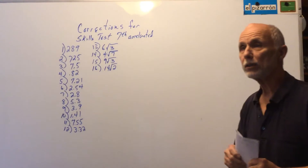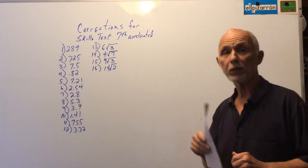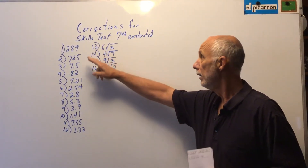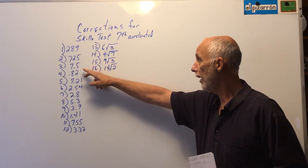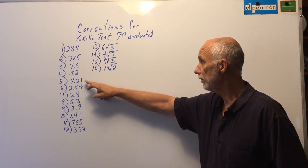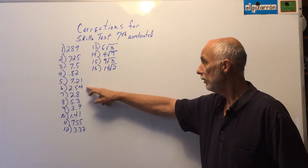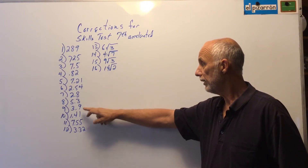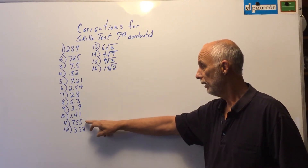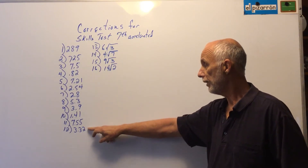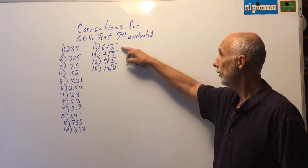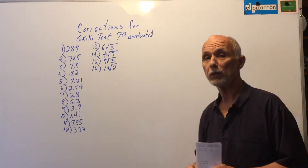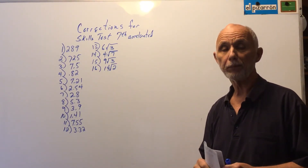The last skills test that you all turned in — I have it from everyone but one person. I went ahead and wrote down the answers right here: 289, 725, 7 and 5 tenths, 82 hundredths, 7 and 21 hundredths, 2 and 54 hundredths, 2 and 8 tenths, 5 and 3 tenths, 3 and 9 tenths, 1 and 41 hundredths, 7 and 55 hundredths, 3 and 32 hundredths, 6 square root of 3, 4 square root of 7, 9 square root of 3, and 14 square root of 2. I'd like you to grade your own paper.